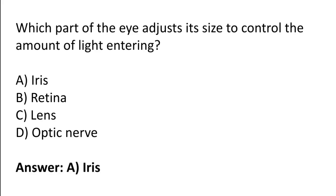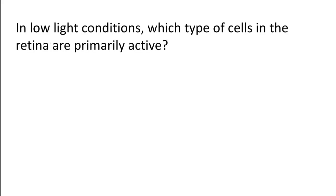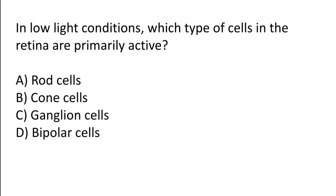In low light conditions, which type of cells in the retina are primarily active? Rod cells, cone cells, ganglion cells, or bipolar cells. The correct answer is option A — in low light conditions, rod cells in the retina are primarily active.